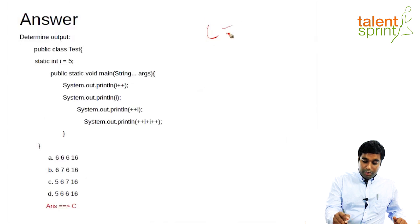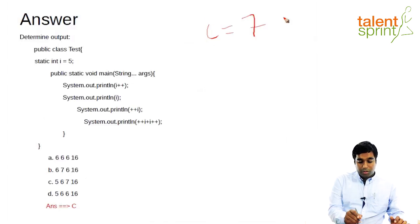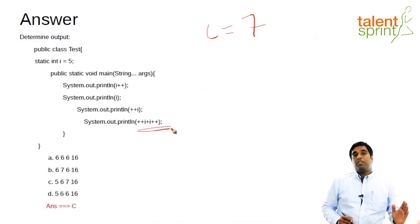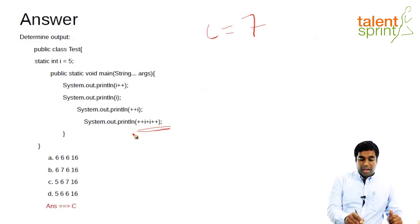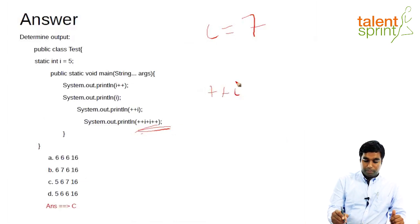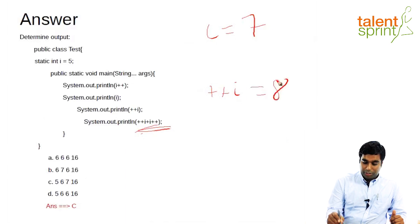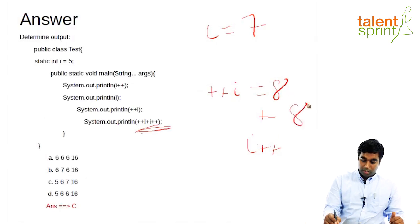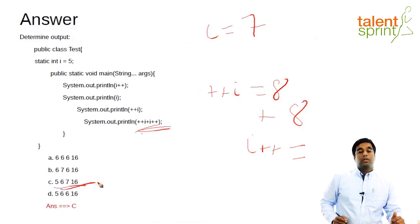Now the value of I is already 7. In this last expression, the first operand is plus plus I, which is pre-increment — so the value of I becomes 8. Then this is added with I plus plus: the value of I is already 8, so 8 plus 8 equals 16. Hence the last print statement will print 16.